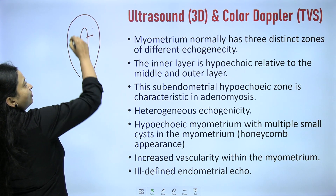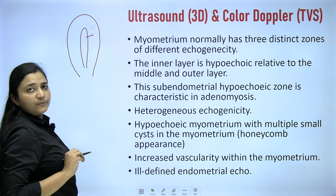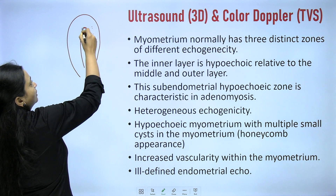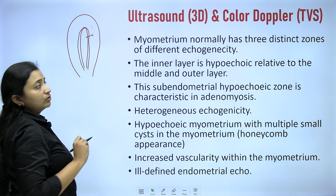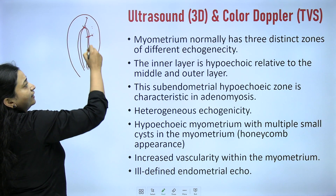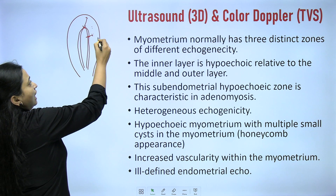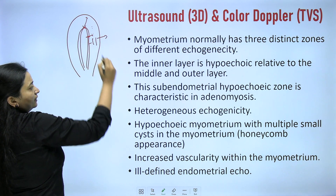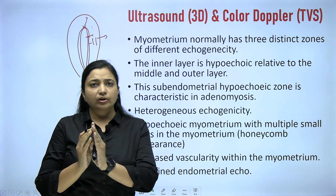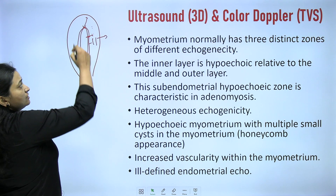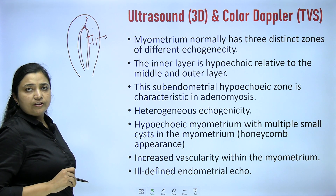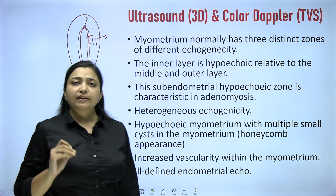The myometrium is very pathognomonic and specific in cases of adenomyosis. The subendometrial layer of the myometrium is especially pathognomonic. If we look at the whole myometrium, we can divide it into three layers: the outer layer, the middle layer, and the inner layer. The inner layer is the subendometrial layer, which is very hypoechoic or translucent. In general cases without adenomyosis, you will find a clean-cut translucent layer beneath the endometrium. But in cases of adenomyosis, there is haze in this subendometrial layer.